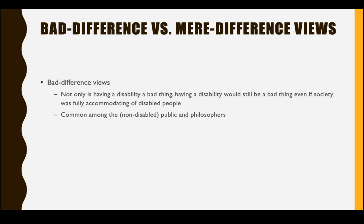If you want to get an idea of what this means, think of what the world would look like if every person were in a wheelchair — how would building structures differ? That's only one disability where we can recognize society is not set up to accommodate. She thinks there are many ways society is ableist. So the bad difference view is the belief that there is something inherent about disability — not just in an ableist society — such that having a disability is a bad thing. This is common among the non-disabled public and the vast majority of philosophers, at least until the last five or ten years.